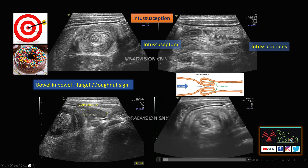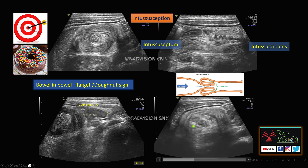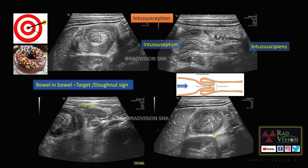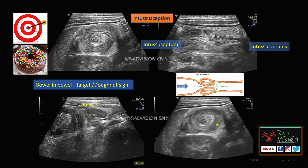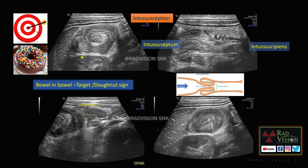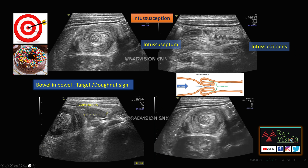Clearly you can see this is the bowel-in-bowel pattern where there is invagination of one part of the bowel into the other part of the bowel. This is typically classically called as bowel-in-bowel appearance, or target sign, or donut sign, seen in intussusception.